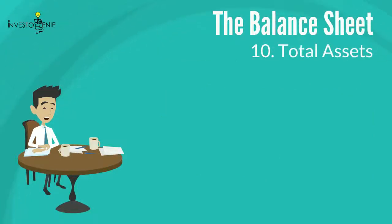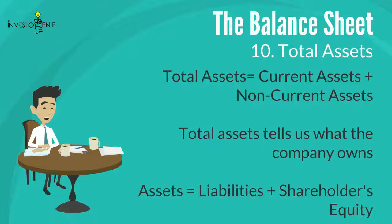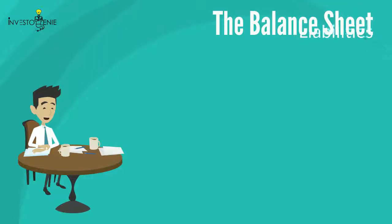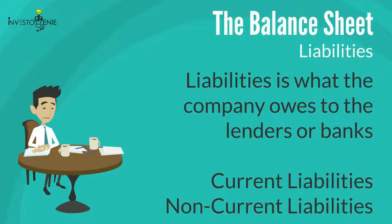Ten: total assets are the sum of total current assets and non-current assets. Total assets tells us what the company owns, and this should equal the sum of total liabilities and total shareholders' equity. Now let's move on to the liability section of the balance sheet. Liabilities is what the company owes to lenders or banks. Liabilities are also divided into two subcategories: current liabilities and non-current liabilities.